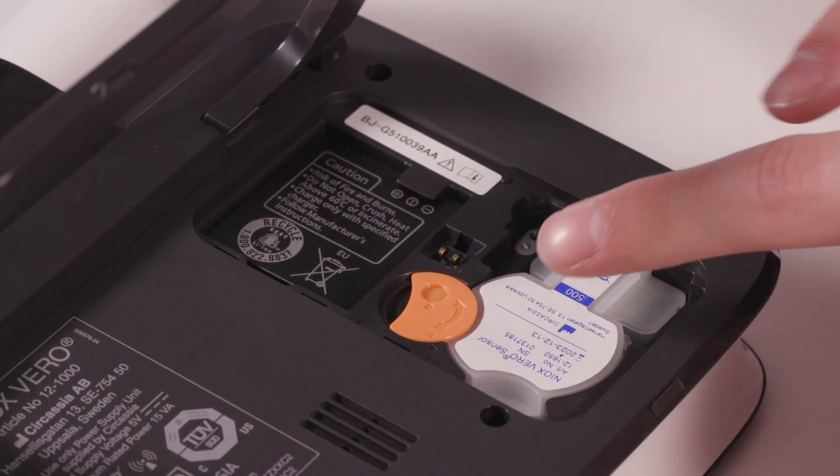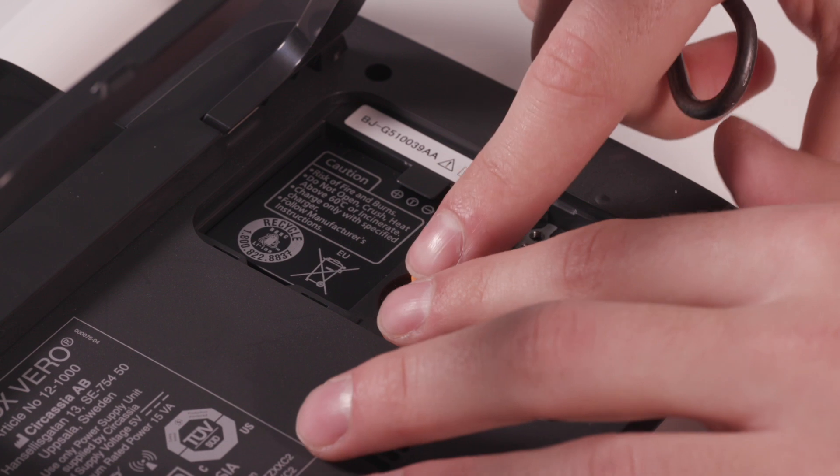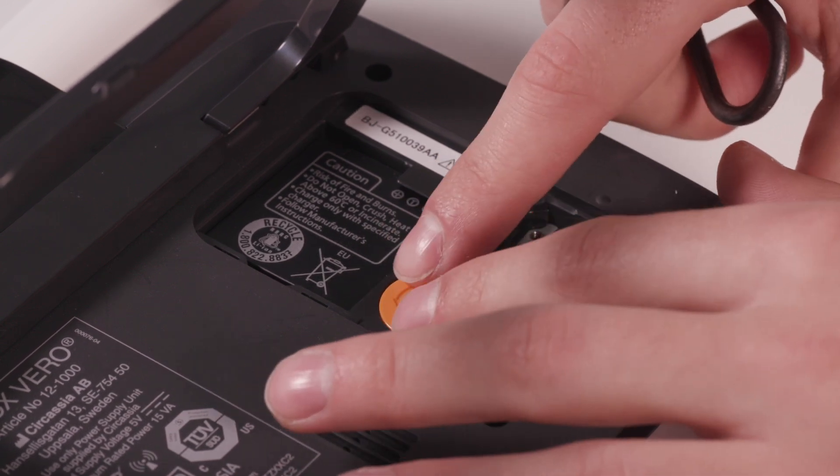Then locate the orange crescent moon and turn it anti-clockwise until it lines up, like so.